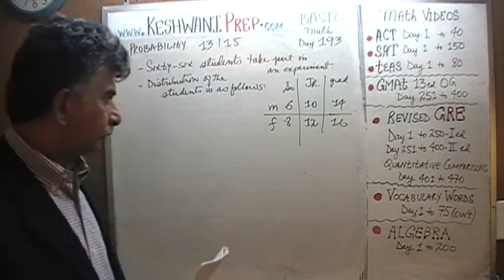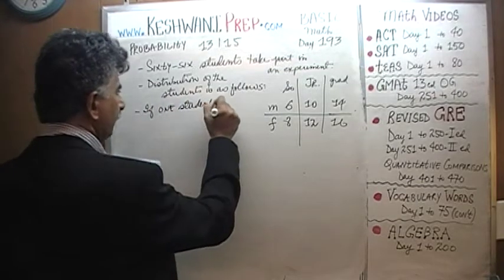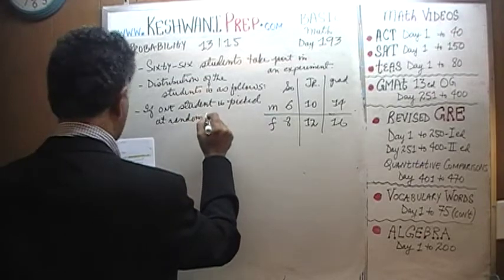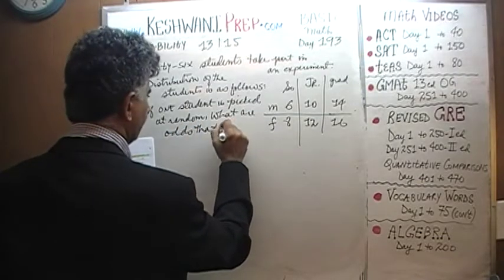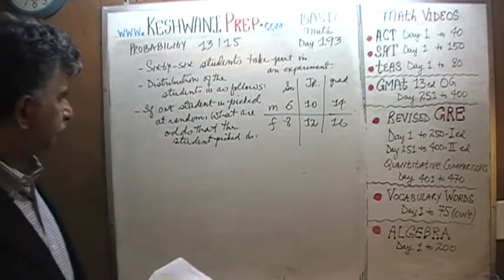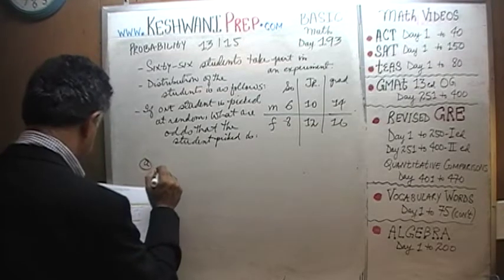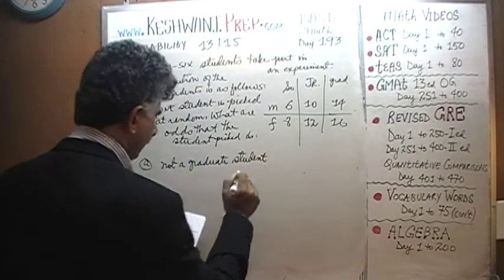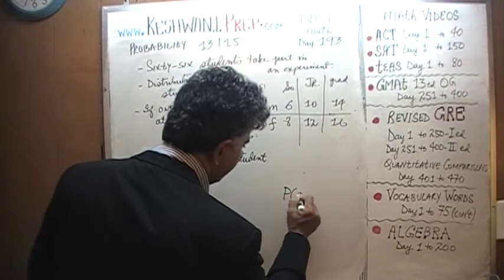Let's see what we need to find out. If one student is picked at random, the first question is: what are the odds that the student picked is not a graduate student? First of all, how should we express this in terms of symbols? This will be the odds of picking graduate students.